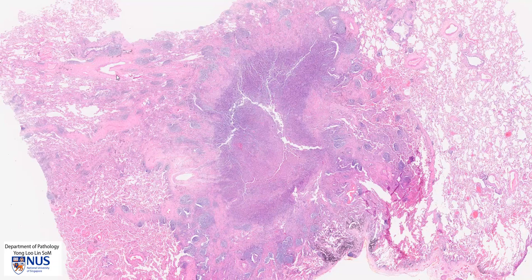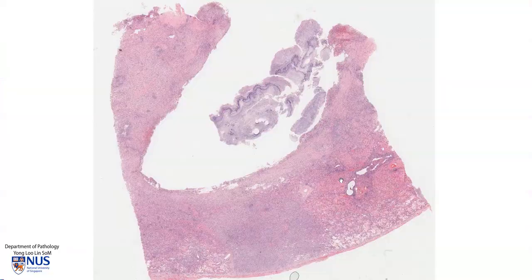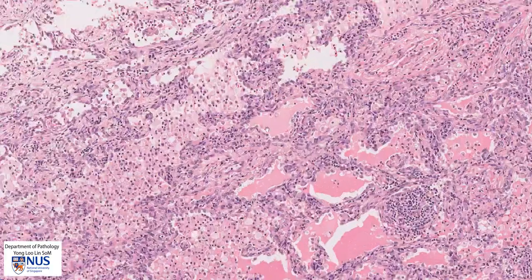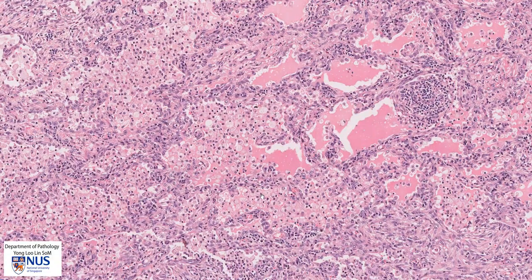Here is another example of an abscess, and this is the lung parenchyma. In this instance, there is a lot of consolidation around the abscess cavity. Zooming into the lung parenchyma, we see there is a lot of fluid and exudate within the airspaces, and also lots of macrophages.